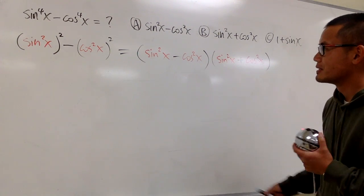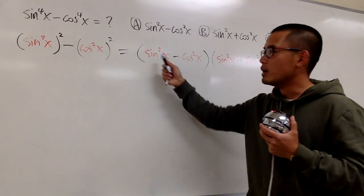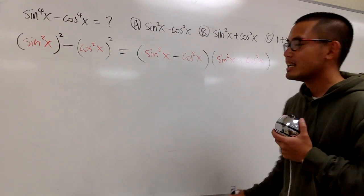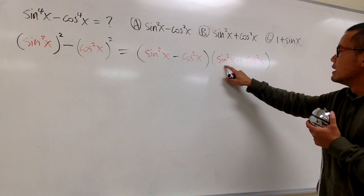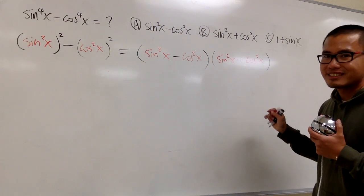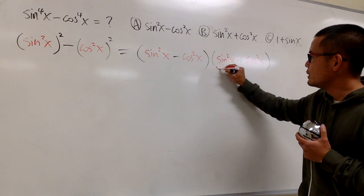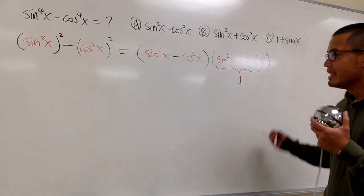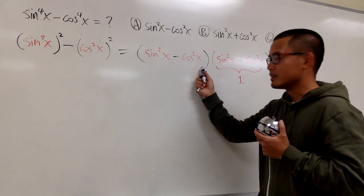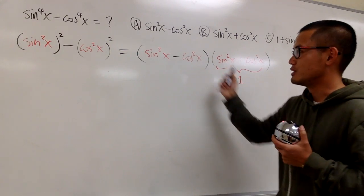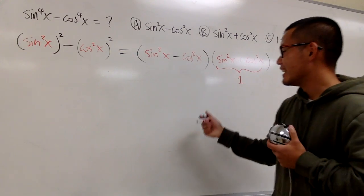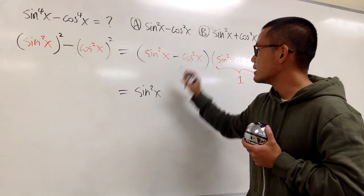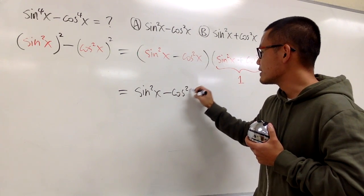Do we have any identity for sine square x minus cosine square x? Well, not as I know of at the moment. How about this? Sine square x plus cosine square x. Yes, we do have a really nice identity, isn't it? This is just equal to 1. Well, in another word, we just have this quantity times 1, which is still just this quantity. So, at the end of the day, this is just the same as sine square x minus cosine square x.